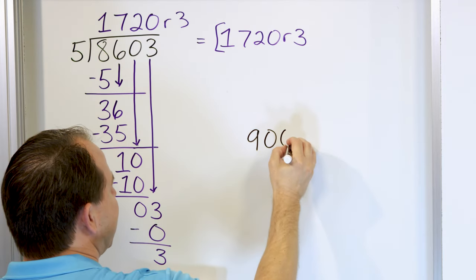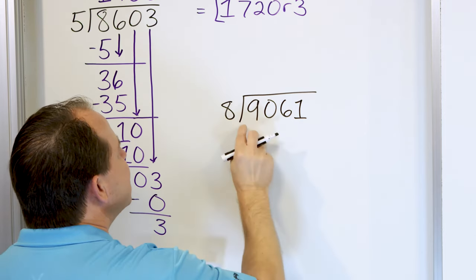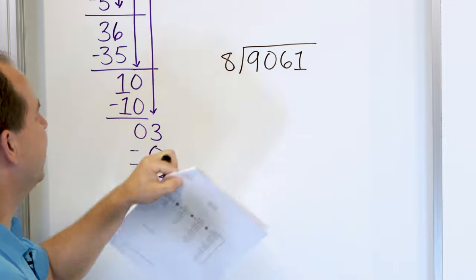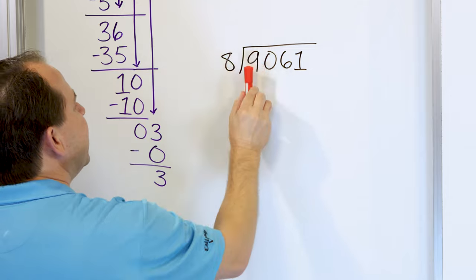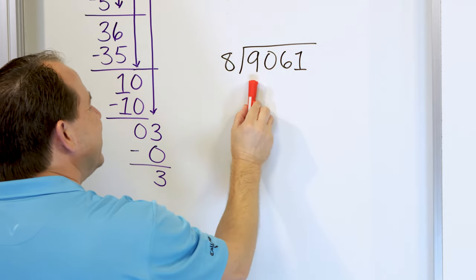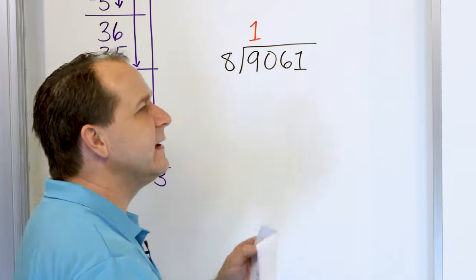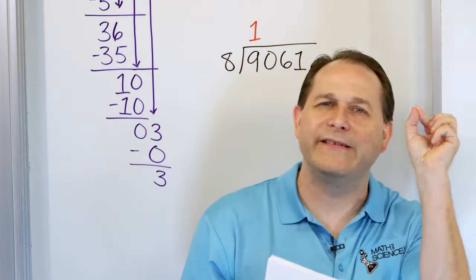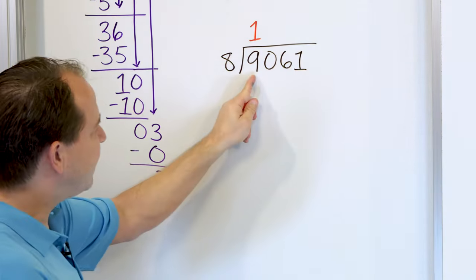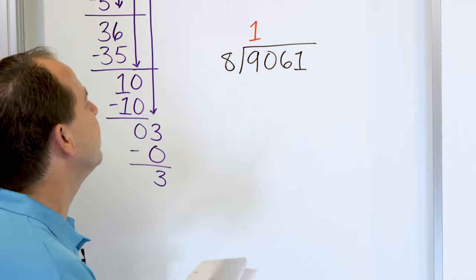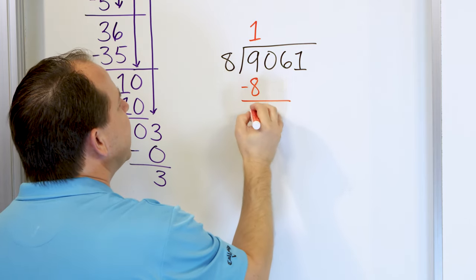What about 9,061 divided by 8? Let's say we have 9,061 potatoes in 8 baskets and want to see how many go in every basket. Look at the first digit. 8 times 1 is 8, 8 times 2 is 16 — too big. We are allowed to go into the first digit here, so we say 8 times 1 is 8 and subtract. 9 minus 8 is 1.